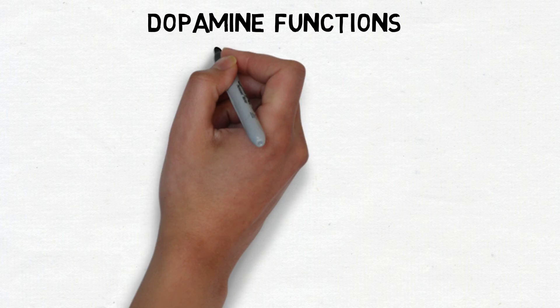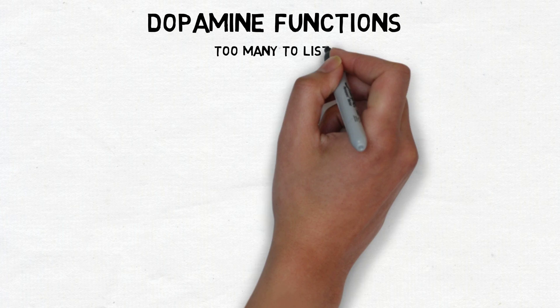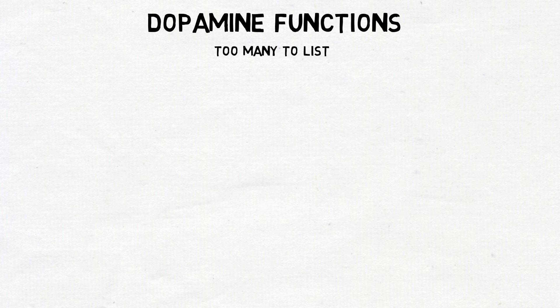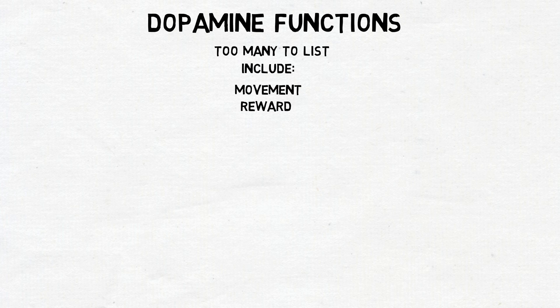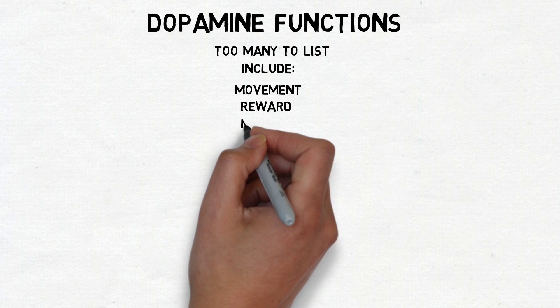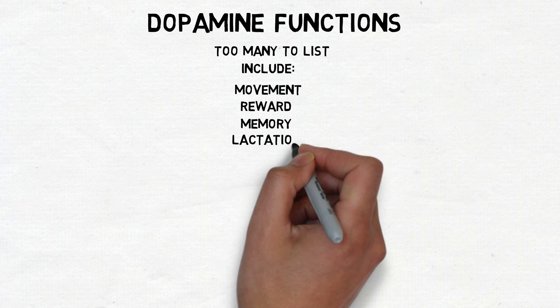Like any neurotransmitter, the functions of dopamine are complex and can't be fully explained with just a short summary. Dopamine is linked to movement due to disorders like Parkinson's disease that involve dopamine deficiencies. It is also often associated with the processing of rewarding experiences. However, dopamine also plays a role in many other functions.